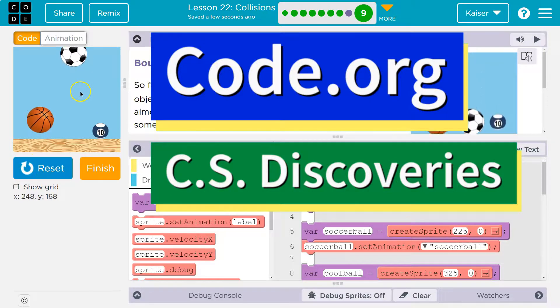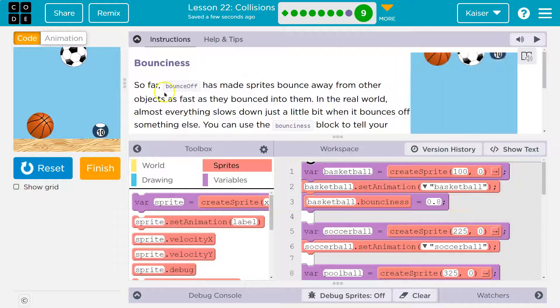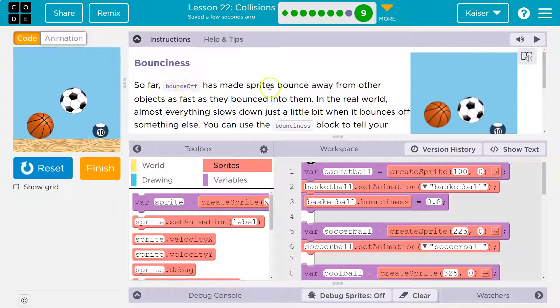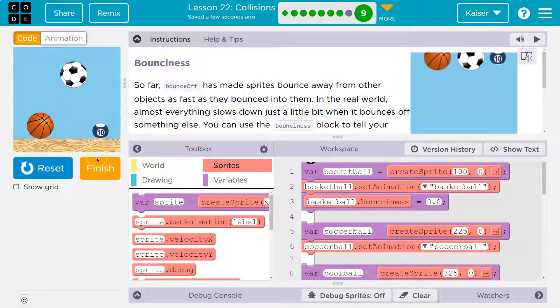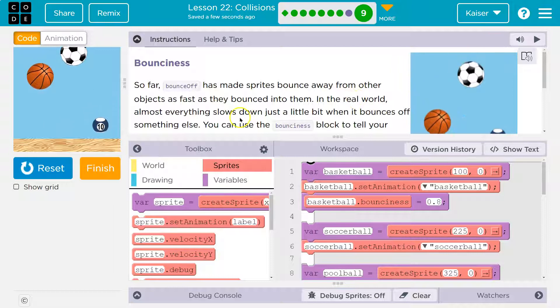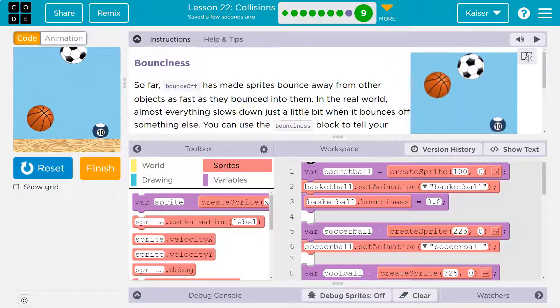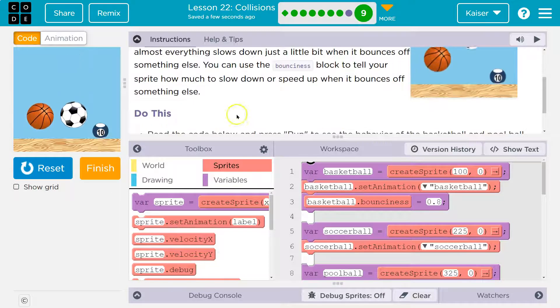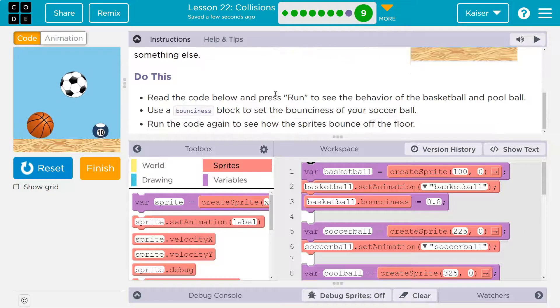This is code.org. We have some bouncing basketball, soccer ball, not a pool ball anymore. Bounciness - so far bounce off has made sprites bounce away from other objects as fast as they bounce into them. In the real world, almost everything slows down just a bit when it bounces off something else. You can use the bounciness block to tell your sprite how much to slow down or speed up when it bounces off another object.